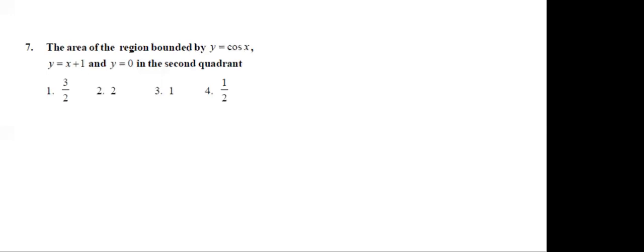The area of the region bounded by y = cos x, y = x + 1, and y = 0 in the second quadrant. The diagram is important here — without the diagram we can't solve this.